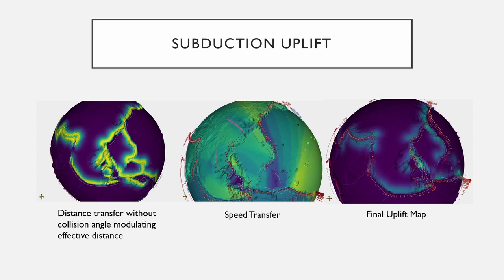To relate the distance to uplift, we choose the skewed Gaussian distribution as our distance transfer. The effective range of our distance transfer is modulated by the angle of collision. To calculate the speed contribution, we average the collision speeds of the closest k plate boundary points to get our speed transfer. Multiplying the speeds and distances together, we can get an uplift map for this particular iteration. The general speed of mountain growth can be controlled by adding a base uplift coefficient to the uplift map.